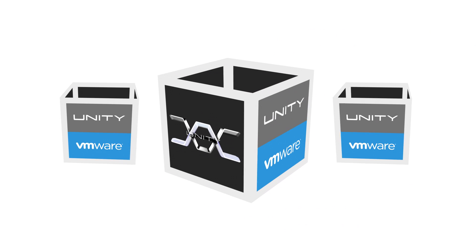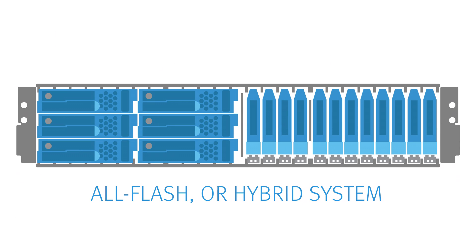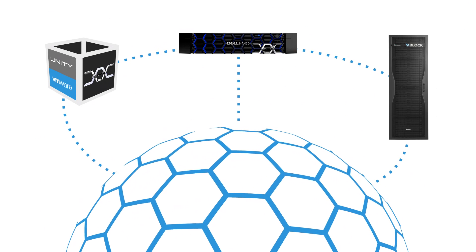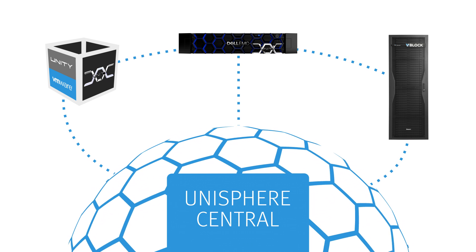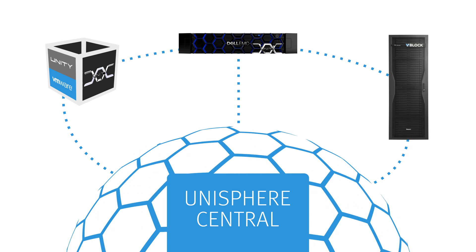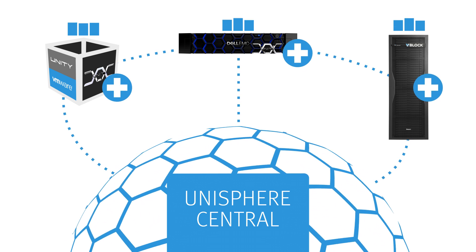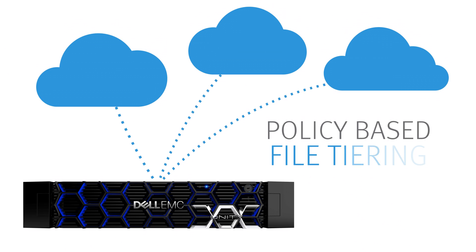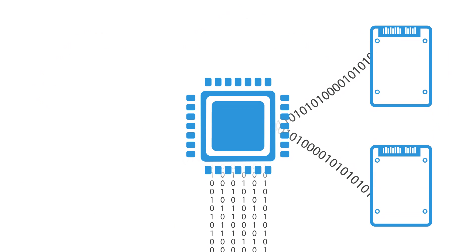Unity is flexible. Available as a virtual storage appliance, a purpose-built all-flash or hybrid system, or as converged infrastructure with one unified operating system that connects them all together. Everything is proactively managed and monitored by Unisphere Central and the new CloudIQ SaaS cloud management platform, with predictive analytics to provide health scores across all Unity systems. You can also tier inactive data to public clouds with automated policy-based file tiering.